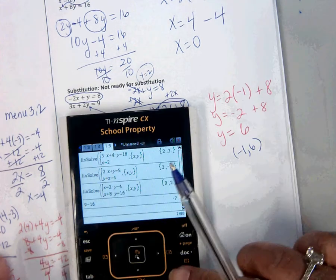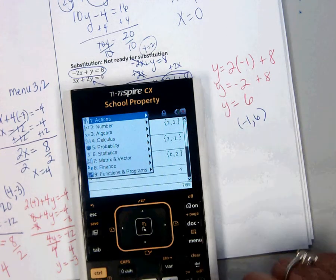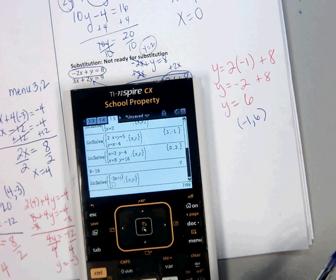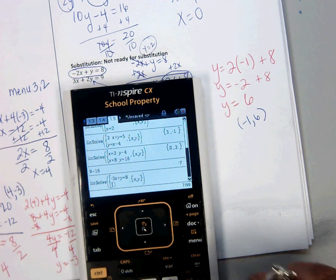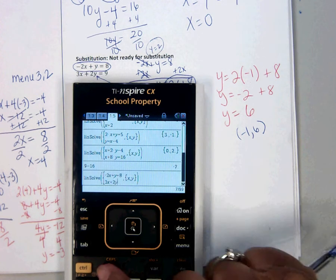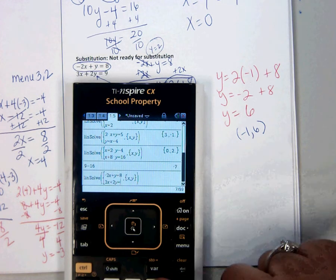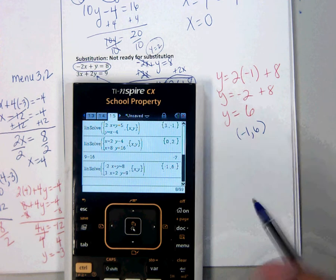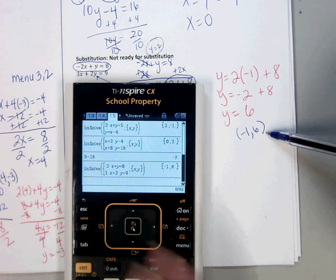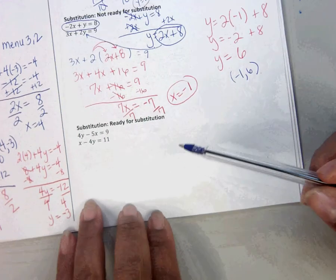We can check it using menu 3, 2. Negative 2x plus y equals 8. 3x plus 2y equals 9. Negative 1, 6. So we did it by hand. Now we're going to do the last problem.